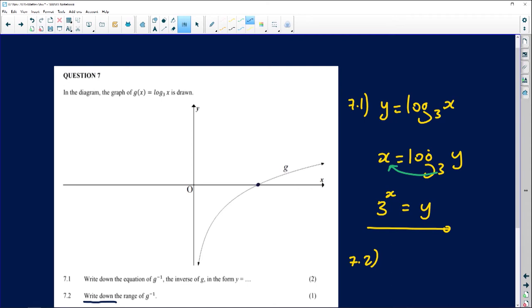Obviously the log graph passes at x equals 1, then the inverse will obviously pass at y equals 1, and it's going to look like this. Now the asymptote of the exponential graph, which is the graph of g to the power minus 1 of x, this is the inverse graph. Obviously its asymptote is going to definitely be the x-axis.